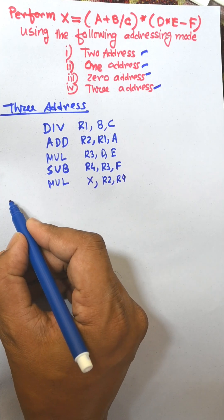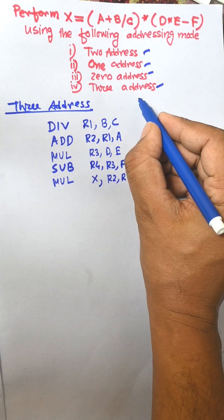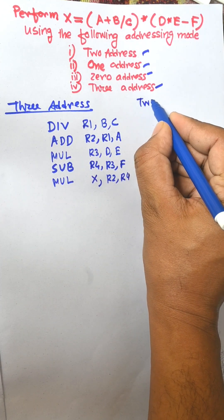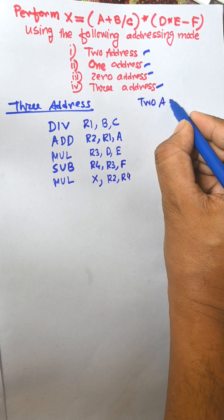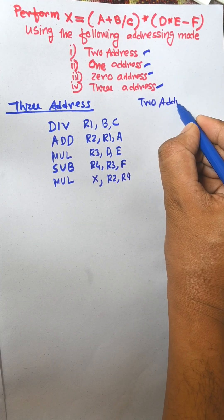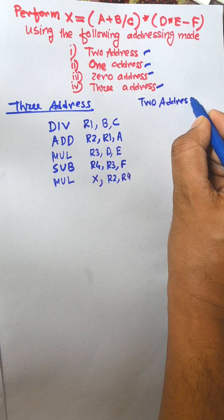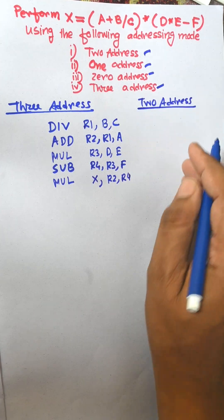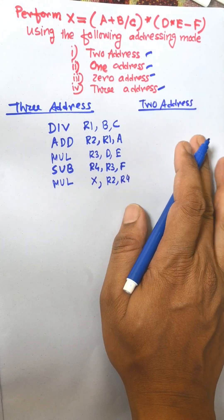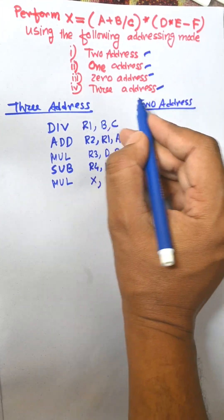Now the two-address instruction format. In two-address instruction format there are two operands.